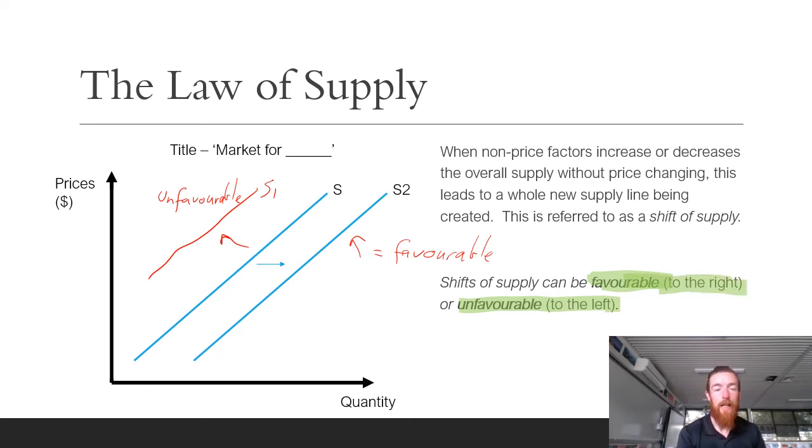So when you do that, you just draw a new line either to the right or the left of the supply curve and call it either S1 or S2, depending on how many shifts you've had to do. Usually it will only be one. But as we can see, if we set a price at the same price, there is either going to be less or more demanded.